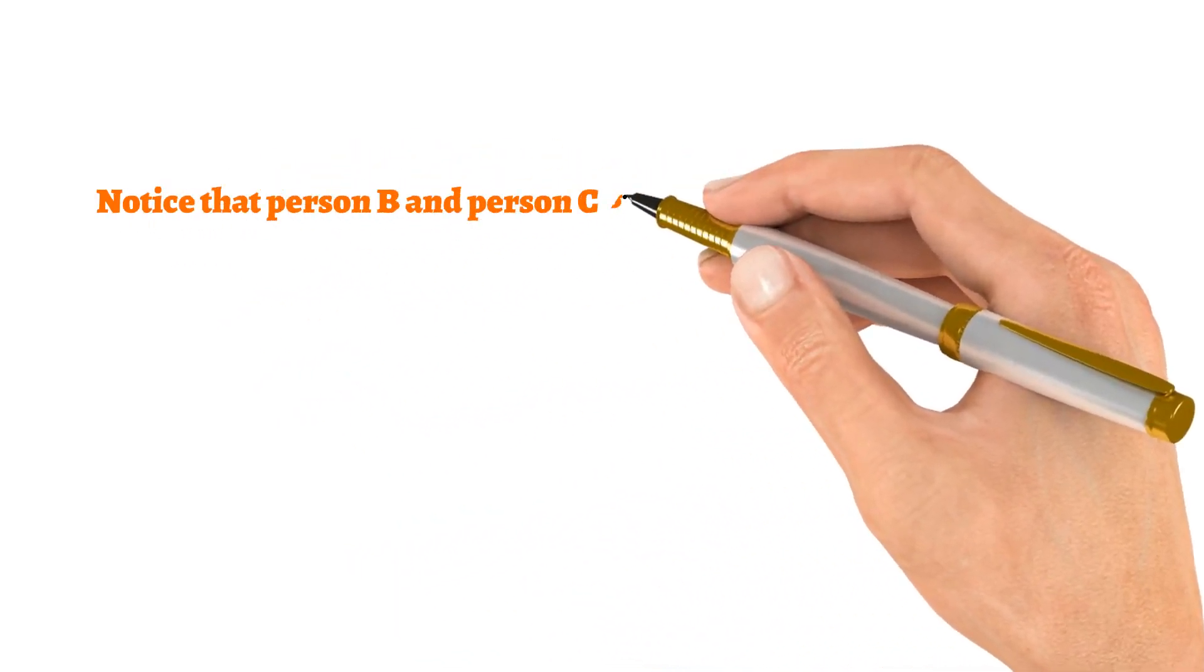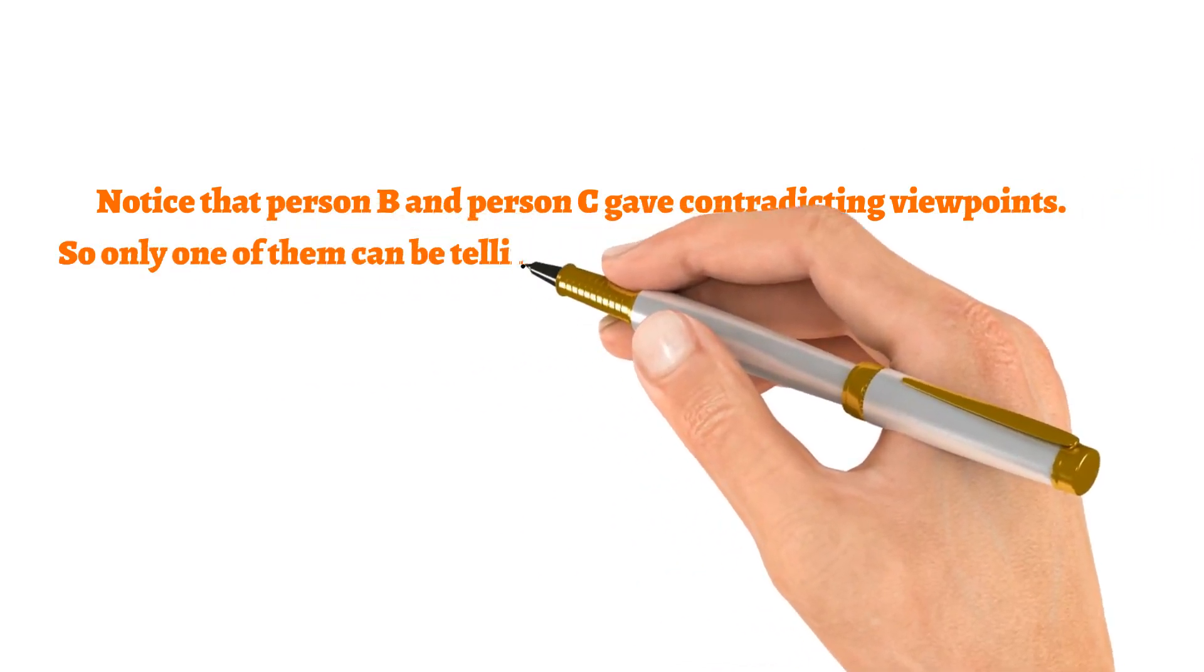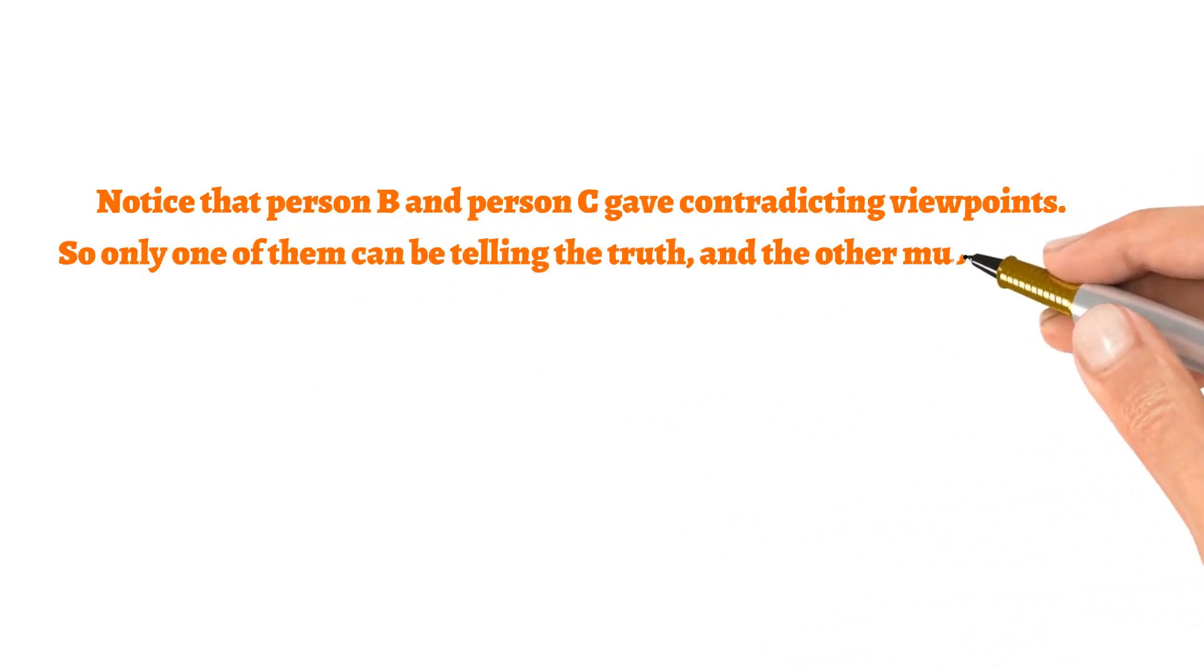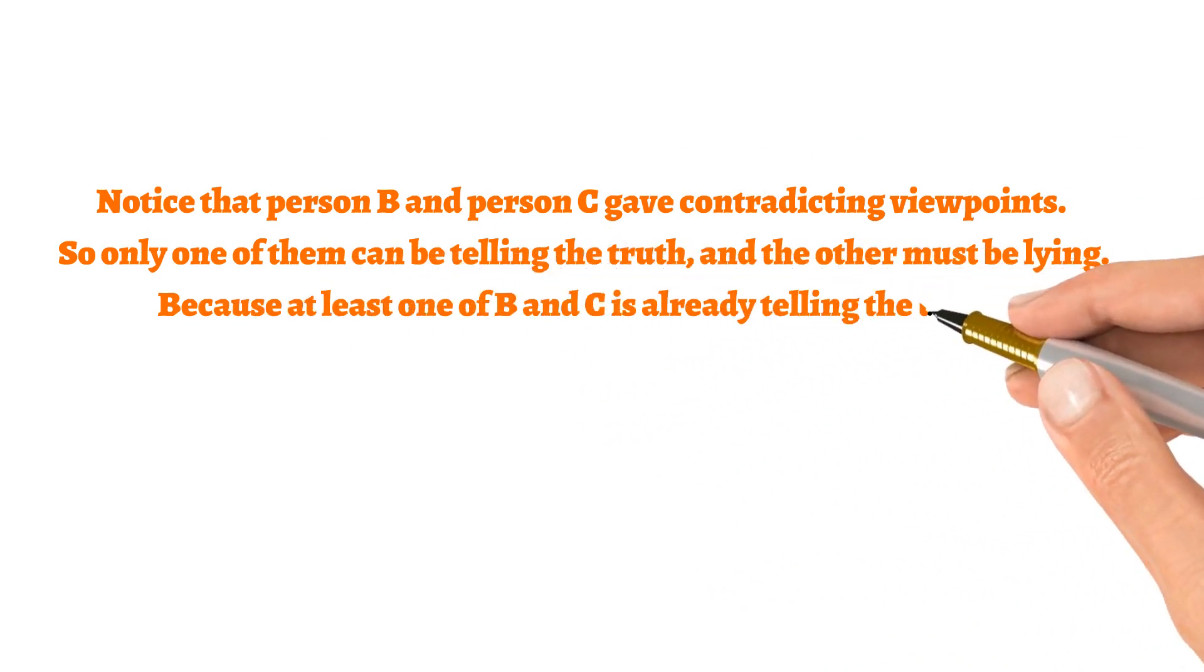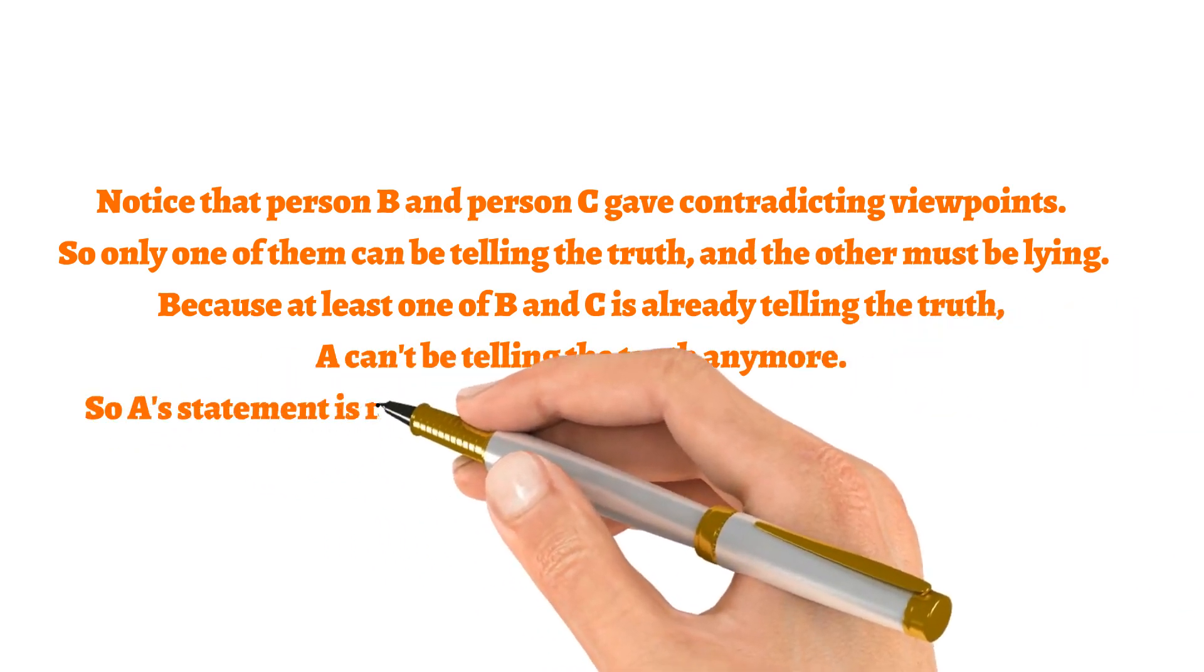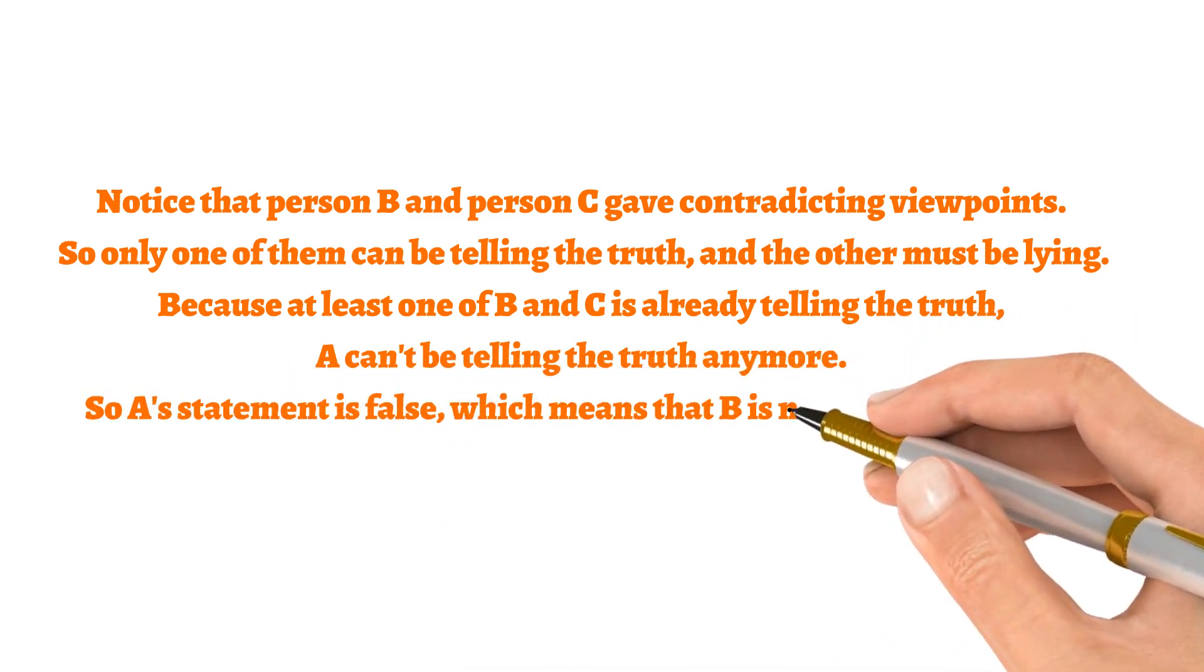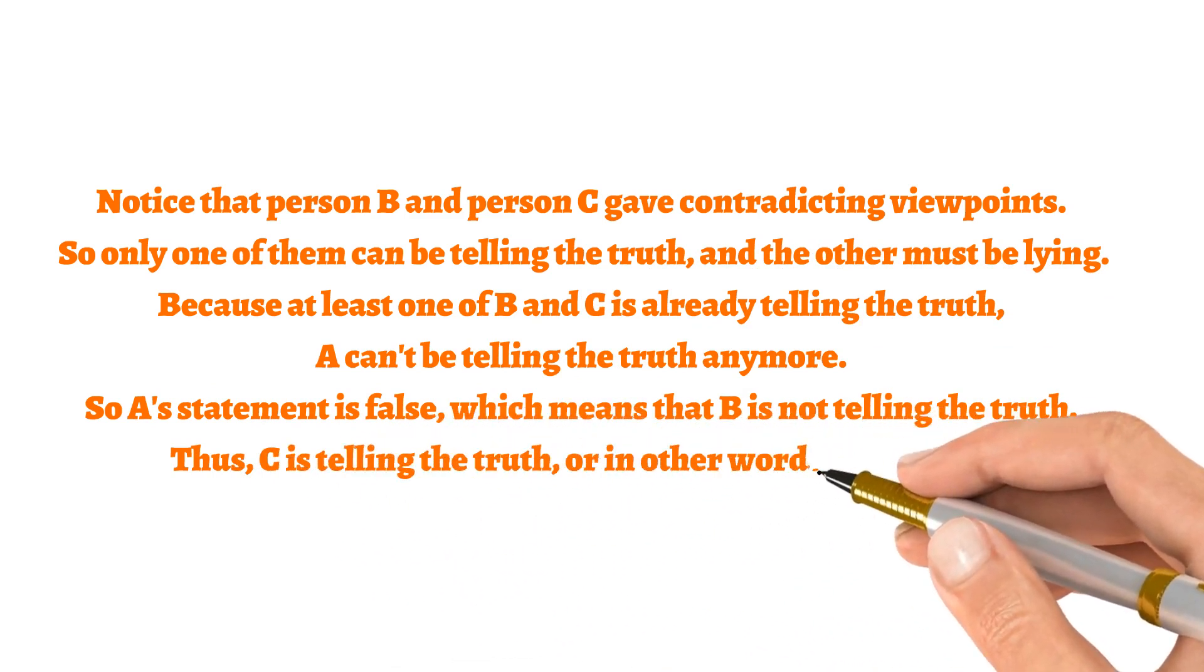Notice that person B and person C gave contradicting viewpoints, so only one of them can be telling the truth, and the other must be lying. Because at least one of B and C is already telling the truth, A can't be telling the truth anymore, so A's statement is false, which means that B is not telling the truth. Thus, C is telling the truth, or in other words, A is guilty.